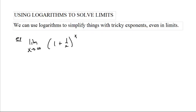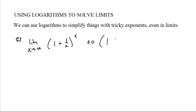For example, suppose we have the limit as x goes to infinity of one plus one over x to the x power. One plus one over x — well, one over x is going to zero, so it's like going to one to the infinite power. That's like one to infinity, and this is another one of those cases where it really depends.